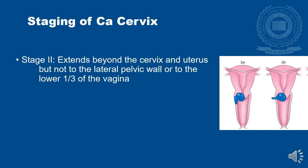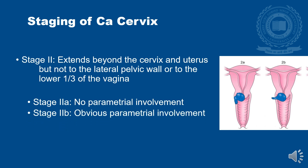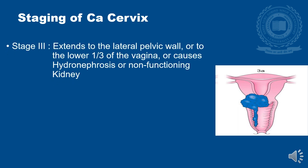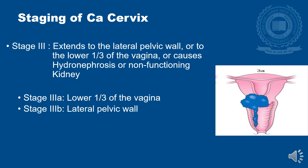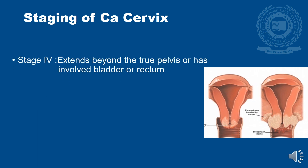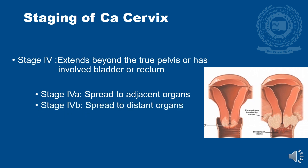Stage 2: the carcinoma extends beyond the cervix and uterus but not to the lateral pelvic wall or lower one-third of the vagina. Stage 2a has no parametral involvement; Stage 2b has obvious parametral involvement. Stage 3 extends to the lateral pelvic wall or lower one-third of the vagina or causes hydronephrosis or a non-functioning kidney — Stage 3a involves the lower vagina, Stage 3b also the lateral pelvic wall. Stage 4 extends beyond the true pelvis or involves the bladder or rectum — Stage 4a is spread to adjacent organs, Stage 4b to distant organs.